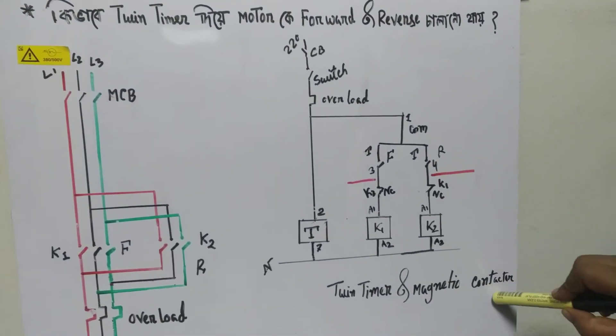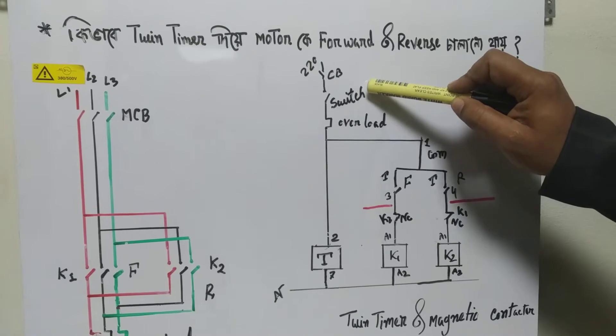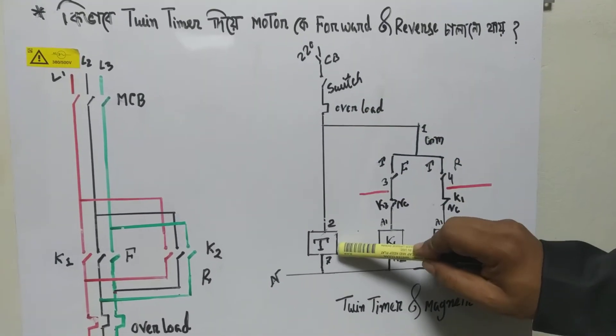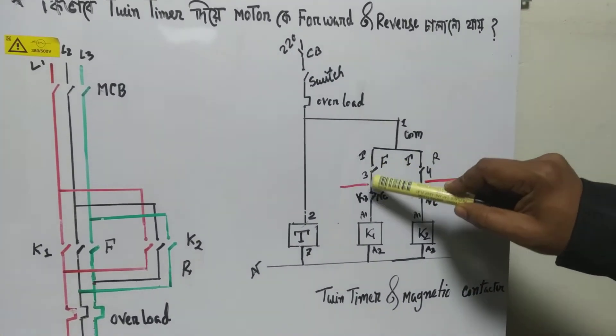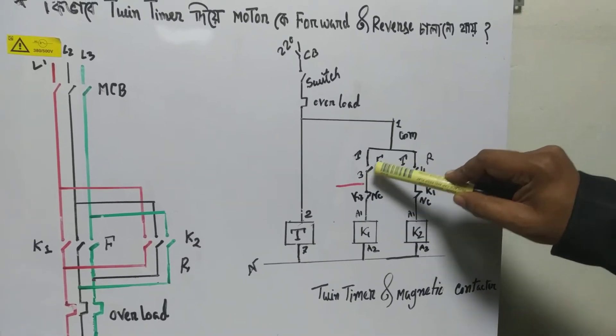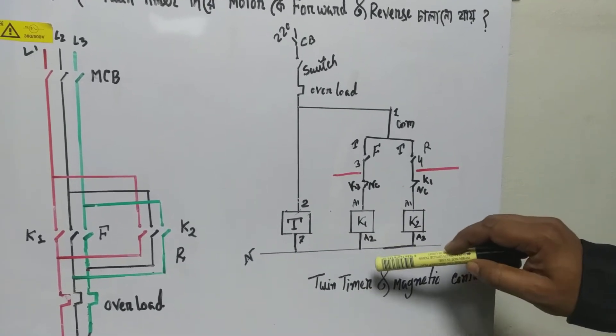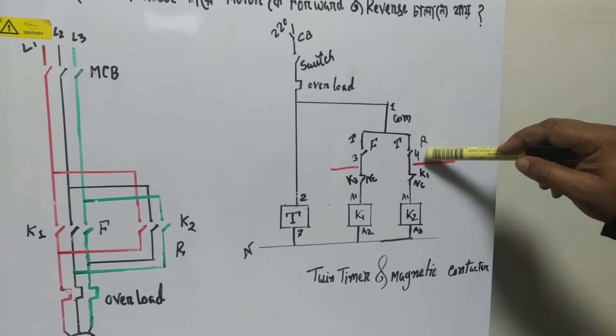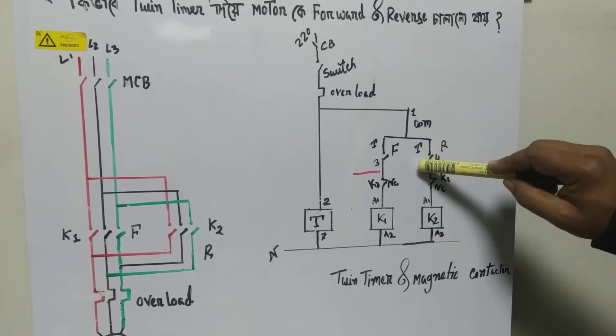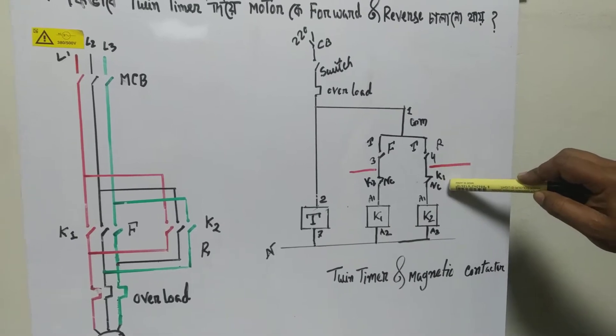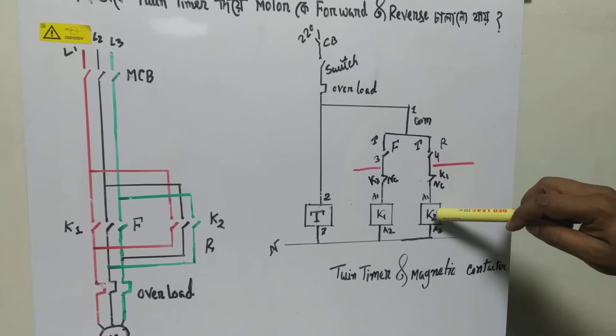From L1 and L2, the twin timer provides a forward signal which is connection number 3, and this will activate the forward magnetic contactor. The twin timer reverse is connection number 4. The magnetic contactors will have interlocking - if one is active, the other connector will be removed to prevent conflicts.